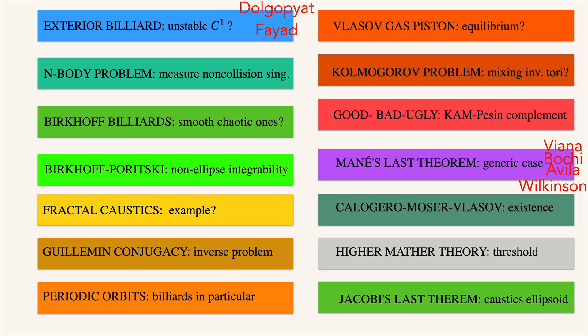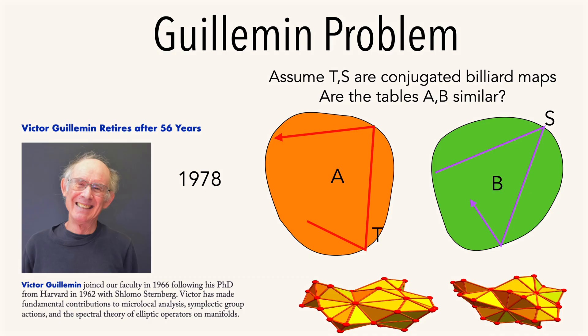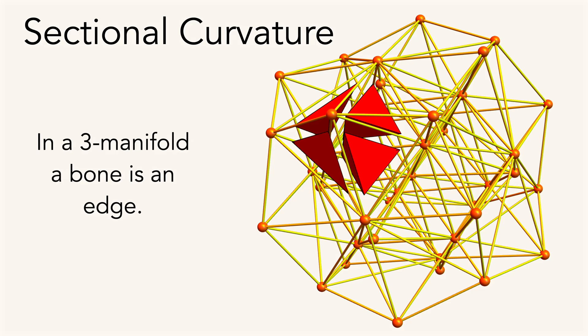Some of these problems can be translated to the discrete. Like the Guillemin problem, if T and S are conjugated billiard maps, the question is whether the tables are similar. I found examples of manifolds which are not graphs, which are not isomorphic, but which have isomorphic billiards.